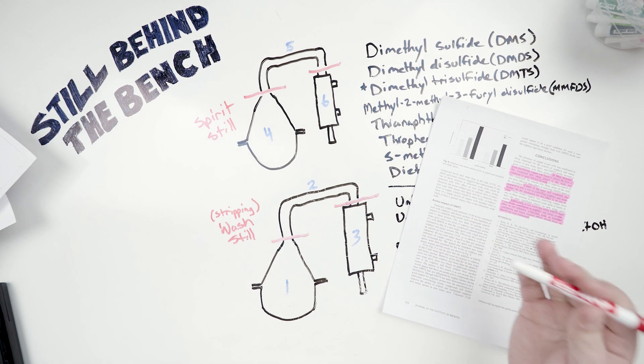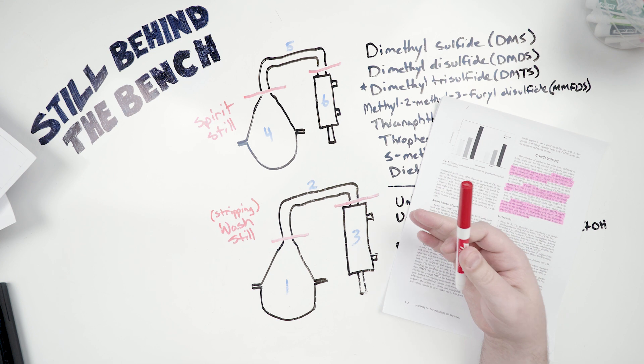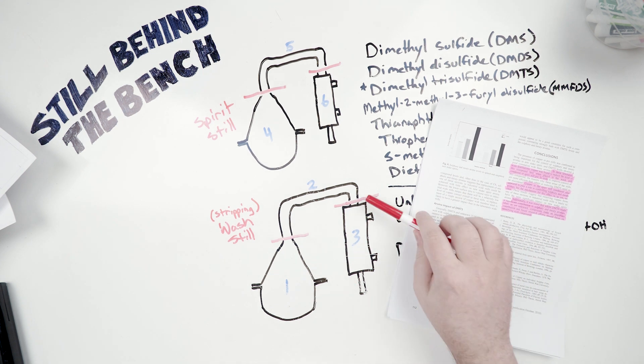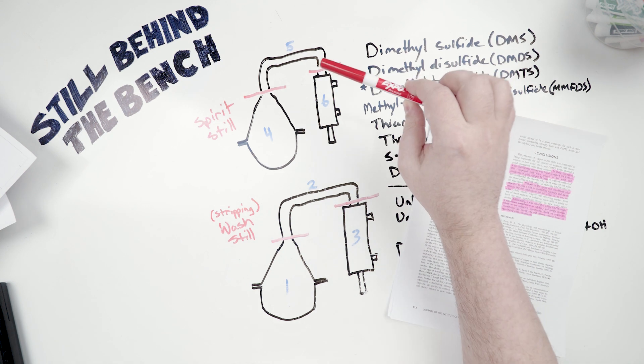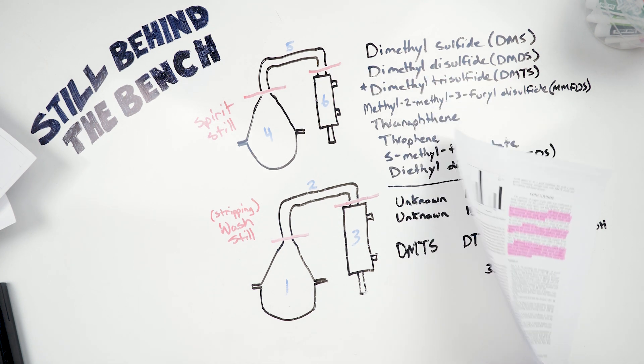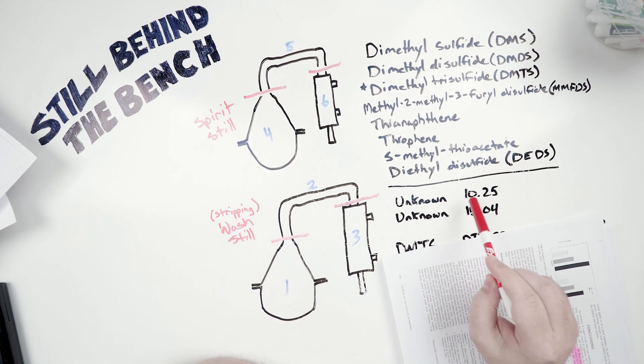The conclusion for their study is that copper was best able to reduce sulfur compound concentrations when the wash still condenser, or the spirit still boiler was made of copper. And they also found that there were some unknown compounds. Unknown 10, they called it unknown 1025, and unknown 1504.